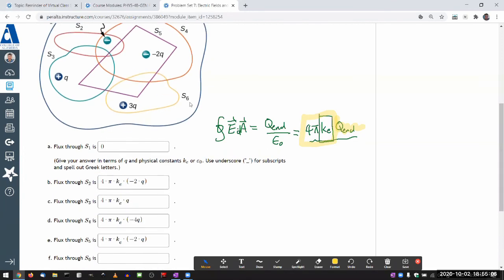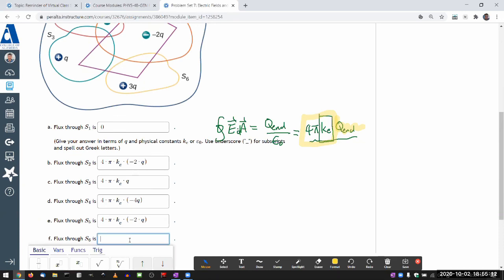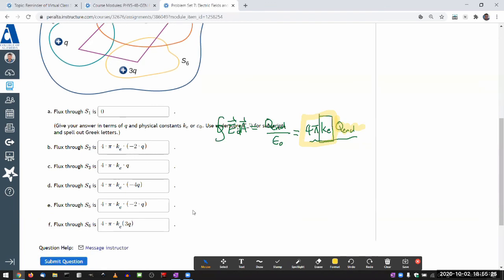Flux through S6—looking at that surface, it only encloses +3Q. So that should be 4π times Coulomb constant times 3Q. You see how I'm sometimes putting the multiplication mark, sometimes not—all those are fine.